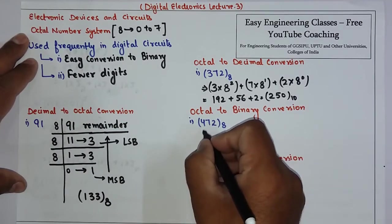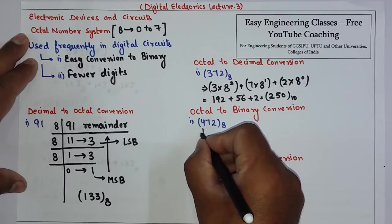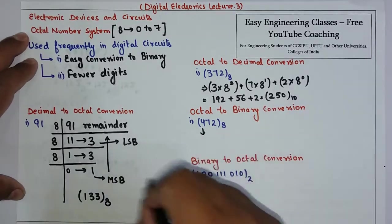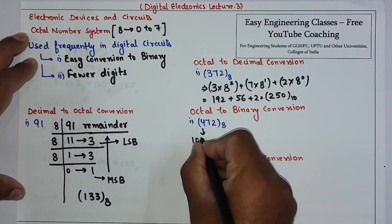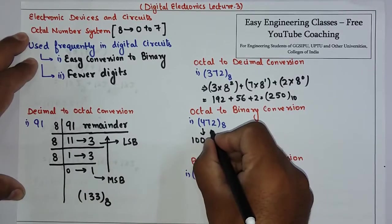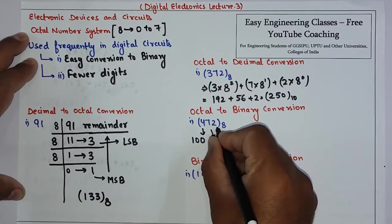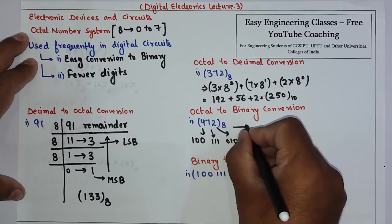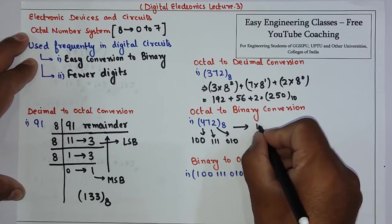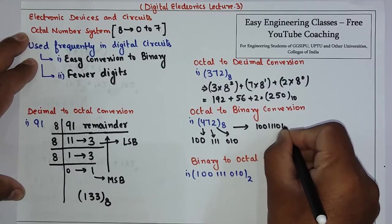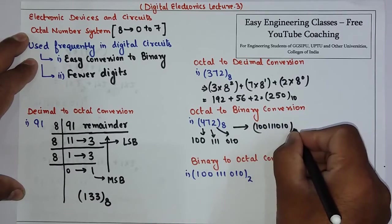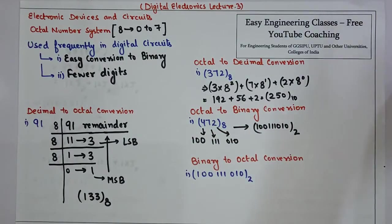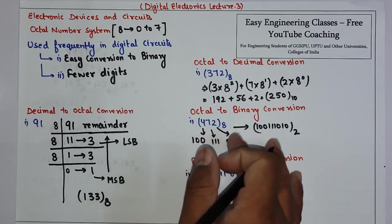Each octal digit is represented by exactly three binary digits. For example: 4 in octal is 1 0 0 in binary, 7 is 1 1 1, and 2 is 0 1 0. That is the binary equivalent of the octal digits.